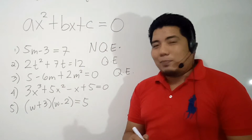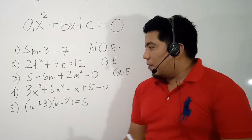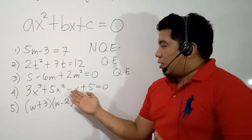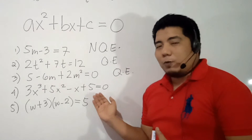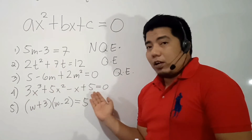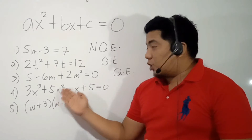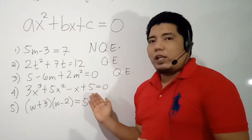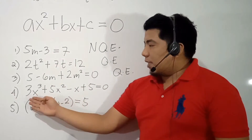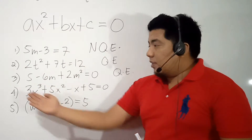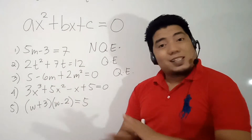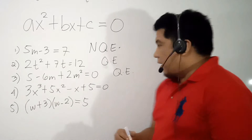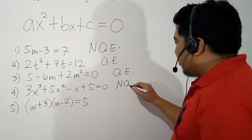Now let's go to Number 4: 3x cubed plus 5x squared minus x plus 5 is equal to 0. We can see that there is an x squared; however, the highest exponent here is x cubed. Therefore, this equation is not in the second degree, so it is not a quadratic equation.